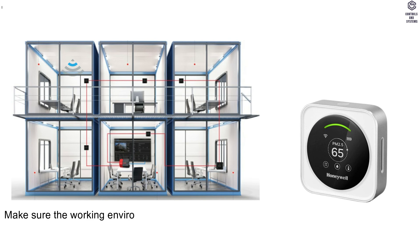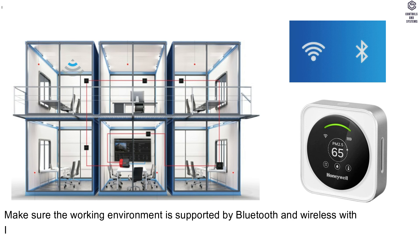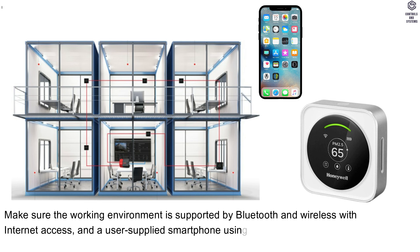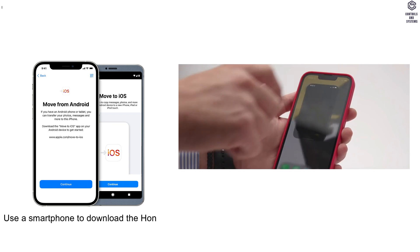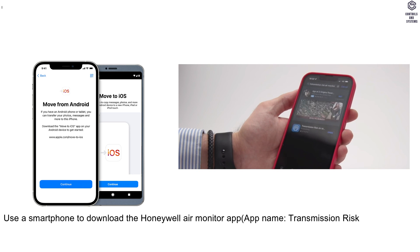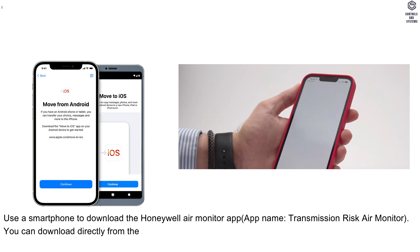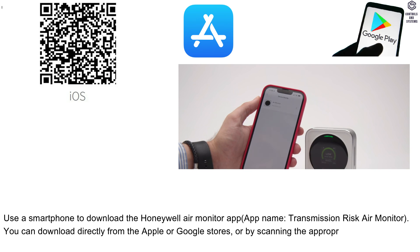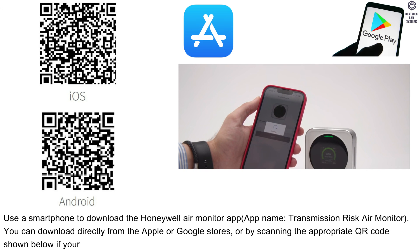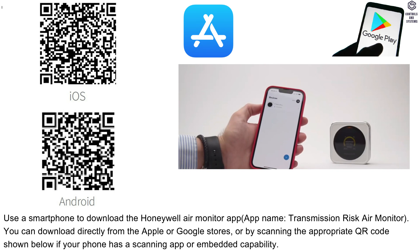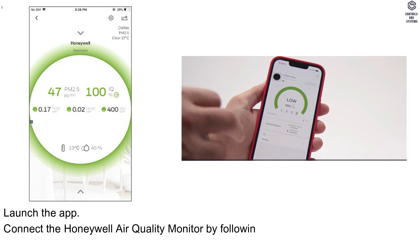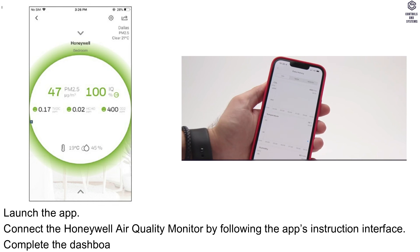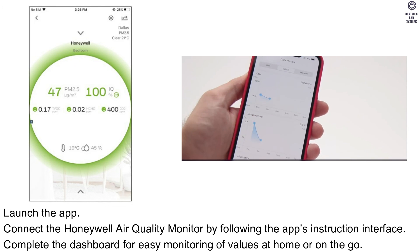Make sure the working environment supports Bluetooth and wireless internet access, and have a user-supplied smartphone using Apple iOS or Android. Power up the device, download the app, and complete the setup. Use your smartphone to download the Honeywell Air Monitor app — app name: Transmission Risk Air Monitor. Download directly from the Apple or Google stores, or by scanning the appropriate QR code. Launch the app, connect the Honeywell Air Quality Monitor following the app's instruction interface, and complete the dashboard for easy monitoring of values at home or on the go.